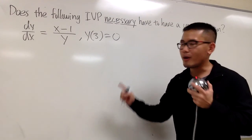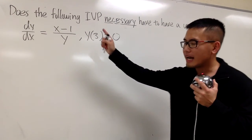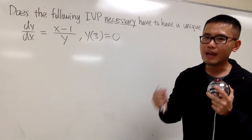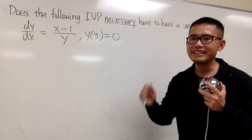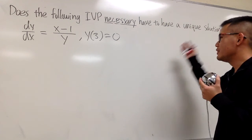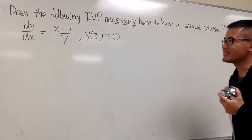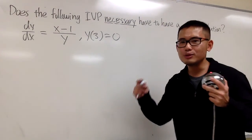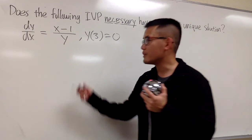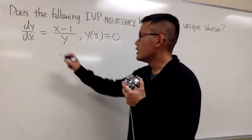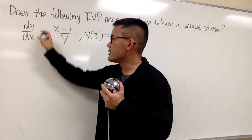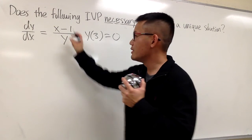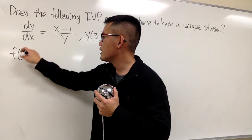Another example. Can we be sure that this initial value problem has exactly one answer, namely a unique solution? Let's go ahead and use the existence and uniqueness theorem for this. You see that dy/dx is already isolated, so here is the function f(x, y).